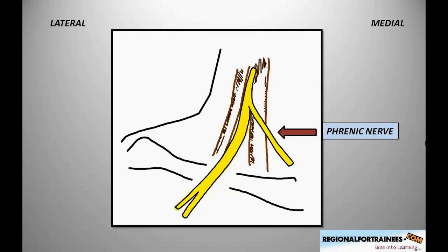This has been confirmed by ultrasound imaging and published papers showing that the interscalene block performed at C7 level reduces hemidiaphragmatic paresis. Understanding the anatomy of the phrenic nerve helps us appreciate how we can avoid this complication of the interscalene block.